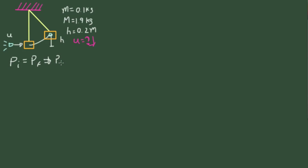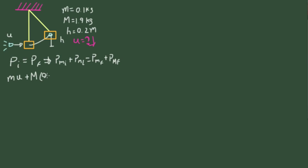The initial momentum of the bullet plus the initial momentum of the wooden block equals the final momentum of the bullet plus the final momentum of the block. Momentum is mass times velocity. The initial momentum of the bullet is its mass m times its initial velocity u. The initial momentum of the wooden block is big M times zero — it was at rest — so that term disappears.